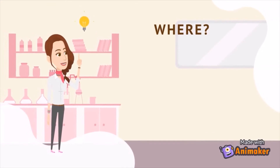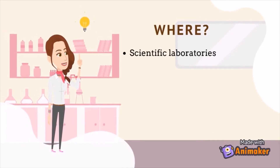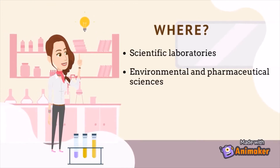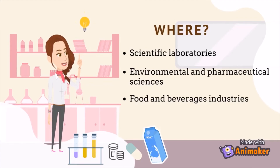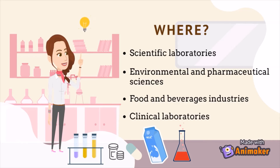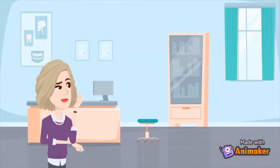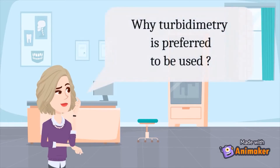Turbidimetry is used in scientific laboratories, environmental and pharmaceutical science, and food and beverage industries. As an example, in foodstuff, Turbidimetry is used to monitor product quality and treatment process efficiency, especially in the dairy and brewing industries. The last application is in clinical laboratories such as clinical chemistry labs.